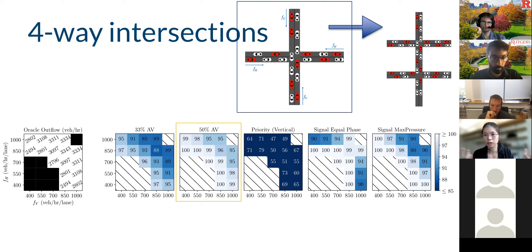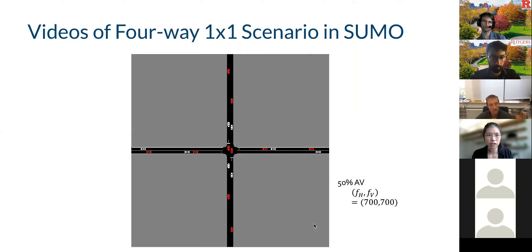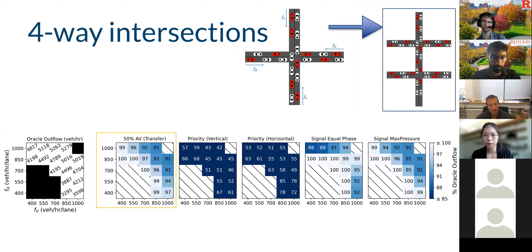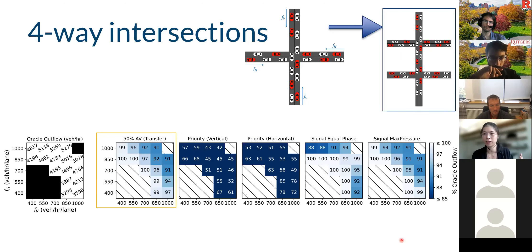We do the same for four-way intersections, which is potentially even more interesting — we train on one intersection and transfer to two intersections. When training with 50% autonomous vehicles, performance exceeds baseline methods. The vehicles learn to coordinate across the two lanes in the same direction. When we do zero-shot transfer to two four-way intersections, we see some emergent coordination occurring, and the performance is comparable to baselines, despite never having seen a second intersection.